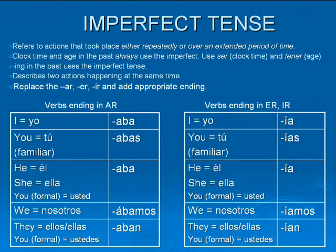Okay, the imperfect tense is also a past tense. It refers to actions that took place either repeatedly or over an extended period of time. You use it for clock time and age. You remove the AR, ER, and IR, and you add the appropriate ending. The AR verbs end completely different than the ER and IR. You use -aba, -abas, -aba, -ábamos, and -aban for AR. And for ER and IR, you use -ía, -ías, -ía, -íamos, and -ían.